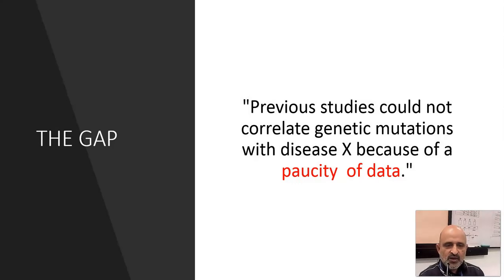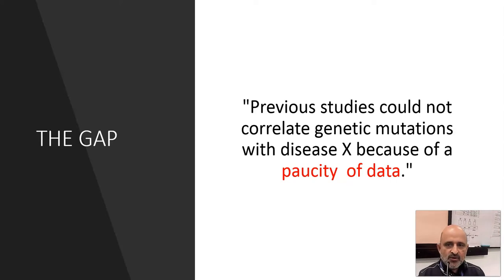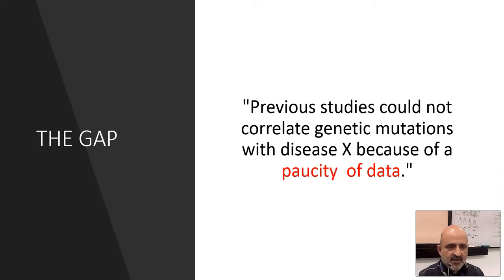When you have established yourself on this path of conducting research, you are going to evolve into an authority in that field. This requires you to read extensively on existing literature regarding your thesis topic. When you have read through the literature, you will be able to identify the gap in knowledge. For instance, a gap might be: 'Previous studies could not correlate genetic mutations with disease X because of a paucity of data' — here the gap is the paucity or limitations of data.